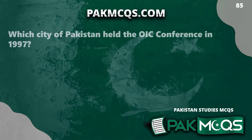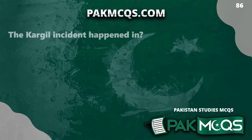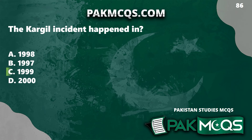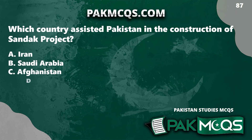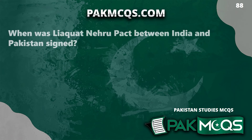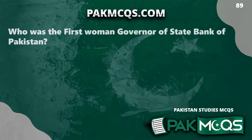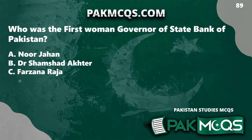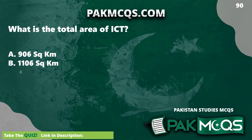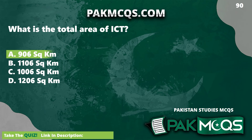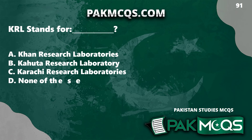Which city of Pakistan held the OIC conference in 1997? Islamabad. The Kargil incident happened in 1999. Which country assisted Pakistan in the construction of the Sandak project? China. When was the Liaquat-Nehru Pact between India and Pakistan signed? 1950. Who was the first woman governor of the State Bank of Pakistan? Dr. Shamshad Akhtar. What is the total area of ICT? 906 km². KRL stands for Khan Research Laboratories.